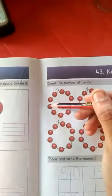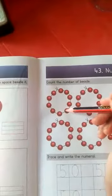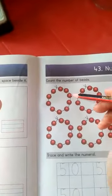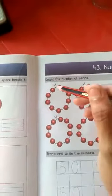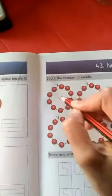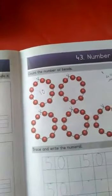1, 2, 3, 4, 5, 6, 7, 8, 9, 10. So in this set, how many beads are there? There are ten beads. Good.